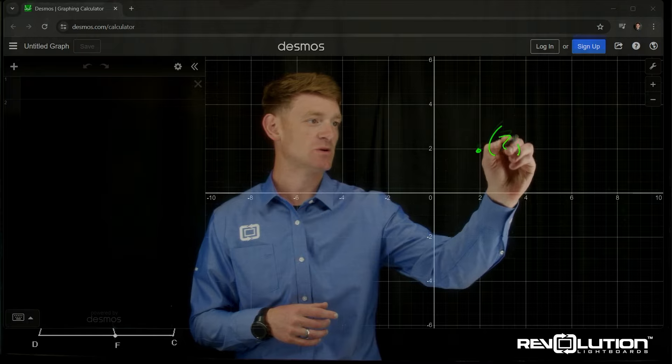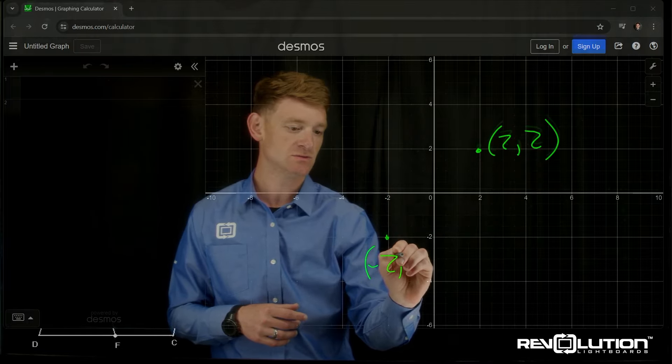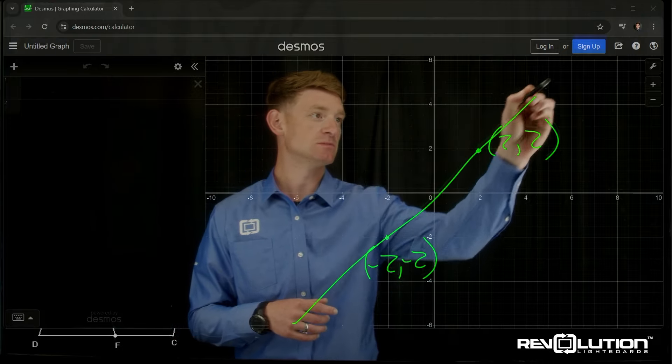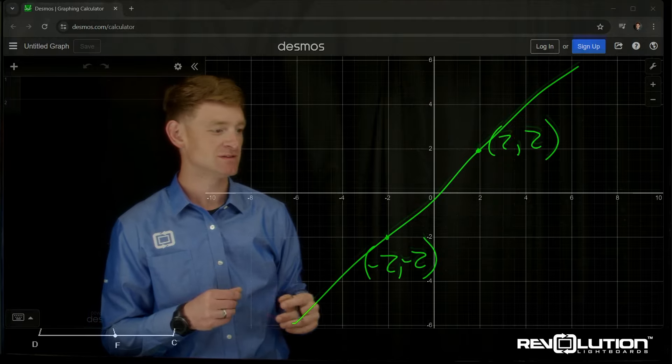So let's talk about the ordered pair 2, 2, and maybe ordered pair negative 2, negative 2. And now we can talk about the line that goes between them. I can see this XY graph in front of me, which is super fun and engaging.